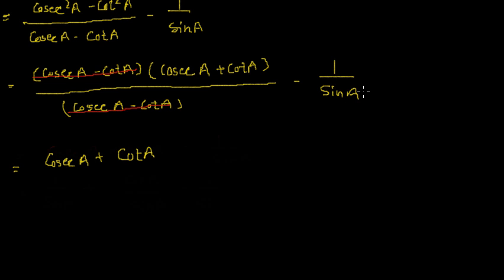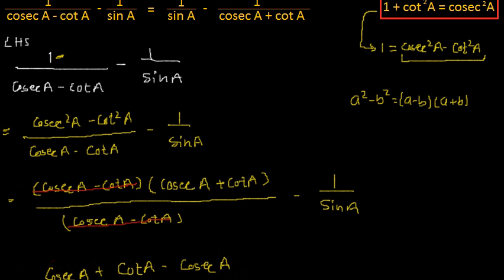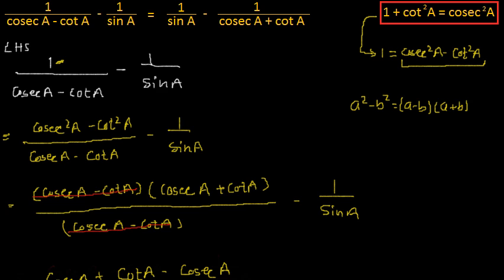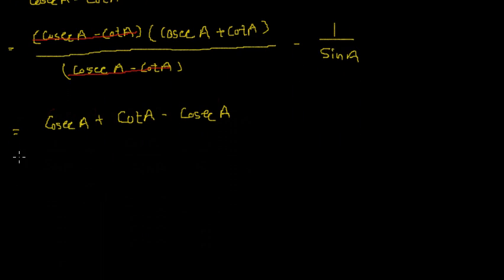Now, 1 by sinA can also be written as cosecA, so we will get minus cosecA here. But if we see properly, our first term is 1 by sinA, and we know that sinA and cosecA are reciprocals of each other. So this cosecA can be replaced by 1 by sinA.